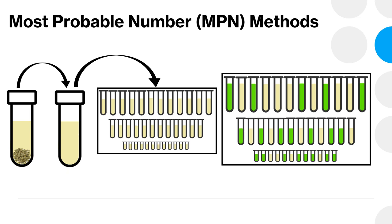Finally, we have most probable number or MPN methods, which are also culture based. However, the principle behind how it works is slightly different because you're not actually growing colonies. Instead of looking at individual cells quantitatively, this method relies on specific characteristics such as turbidity or acid production to predict the number of growth units of microbes that would most likely exist if colonies were grown. Serial dilutions must still be performed in order to confidently measure the concentration of microbes present.